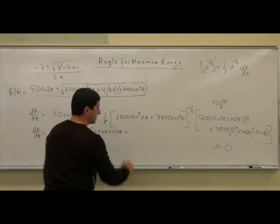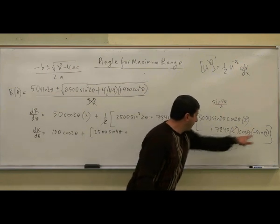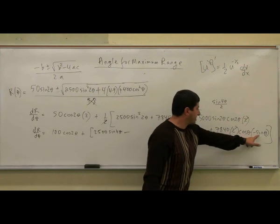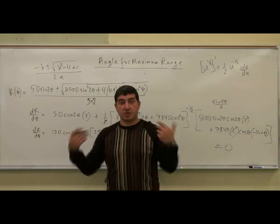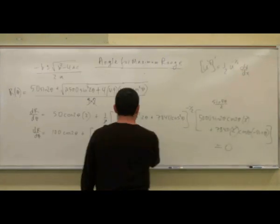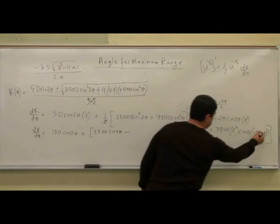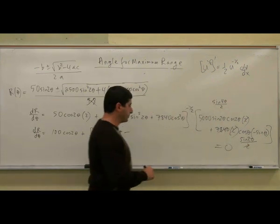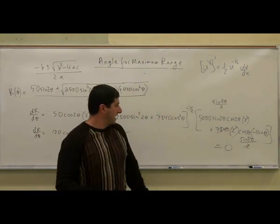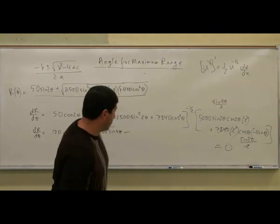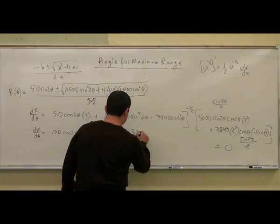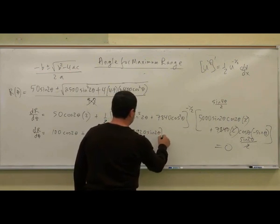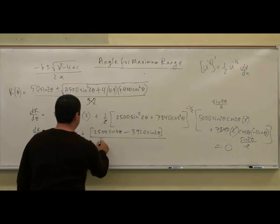Actually it'll be minus, because of this minus sign. And then you'll have sine theta times cosine theta, which we can again use the double angle formula — it'll be sine of 2 theta over 2. This 2 will make this 3,920. And then it'll be sine of 2 theta divided by this thing to the half power.